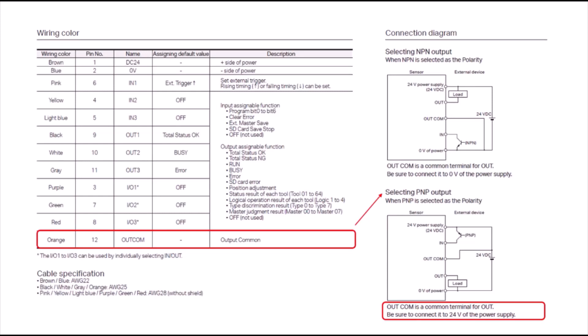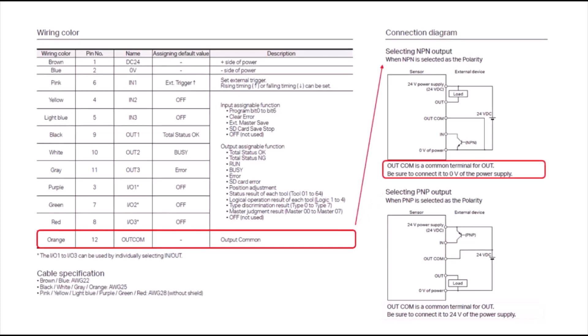Where the orange wire will connect will depend on what polarity you're going to use. If you're going to want a PNP 24-volt output, then your output common would connect to the 24-volt side of your power supply. If instead you are wanting an NPN 0-volt output, your output common would connect to the 0-volt side of your power supply.